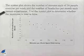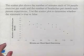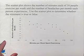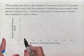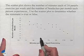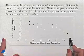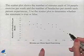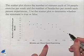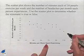So let's look back at our chart. To find the person who exercised most per week, we're going to look at the point which is furthest to the right for the most number of minutes per week spent exercising. That would be this point.